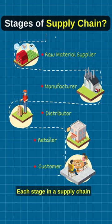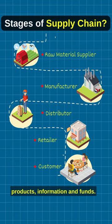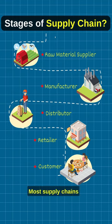Each stage in a supply chain is connected through the flow of products, information, and funds. Most supply chains are actually networks.